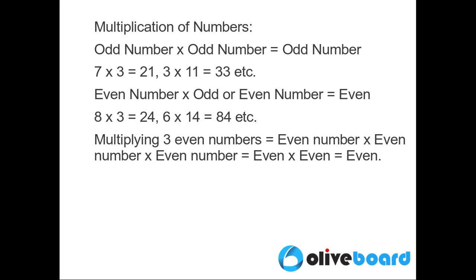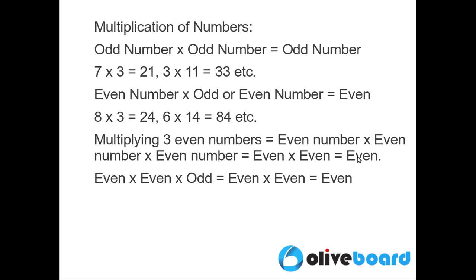Now the first question given is: what is the number resulted when we multiply 3 even numbers? Multiplying 3 even numbers is even number into even number into even number. The product of the last 2 even numbers is an even number, which means an even number into another even number, so the output will be an even number.